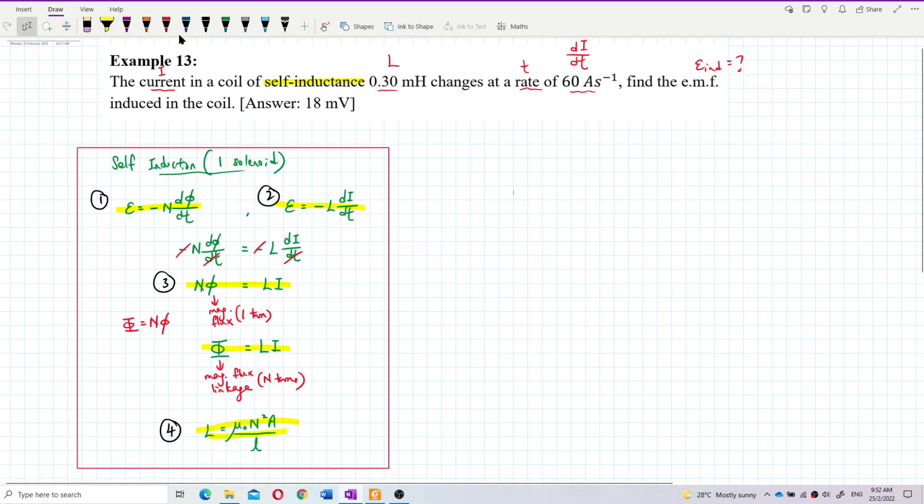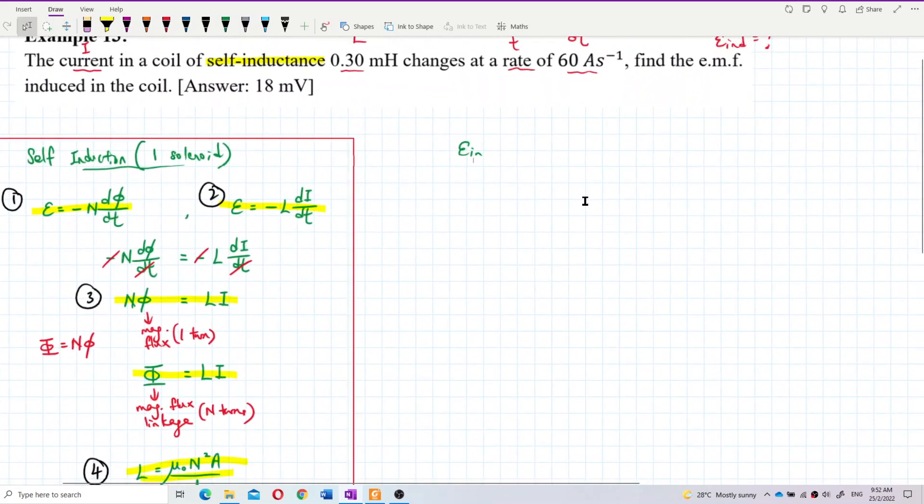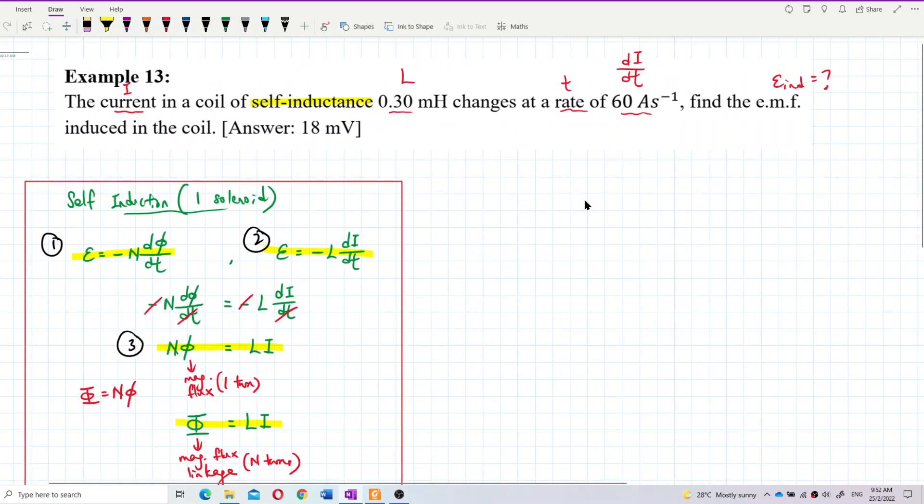E induced equals negative L di/dt. L is 0.3 millihenry - you need to change to SI unit. Milli is 10⁻³, so that's 0.3 × 10⁻³ henry. And then di/dt is 60 ampere per second, already in SI unit.